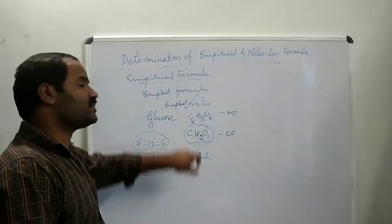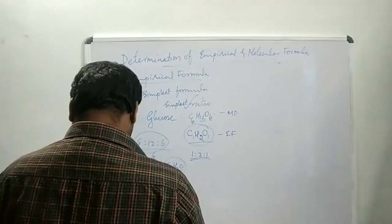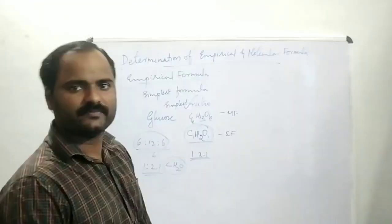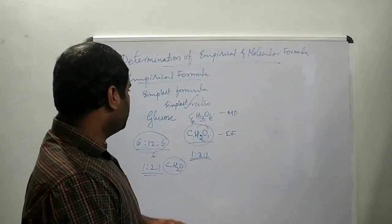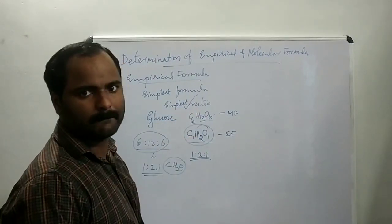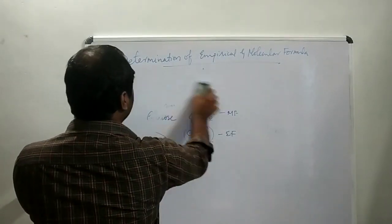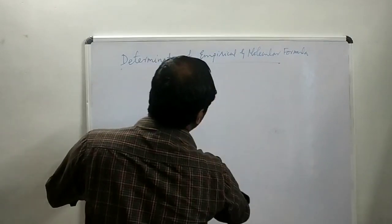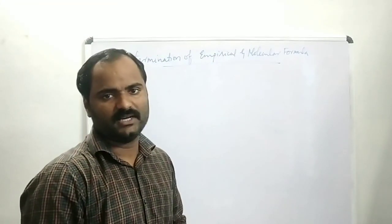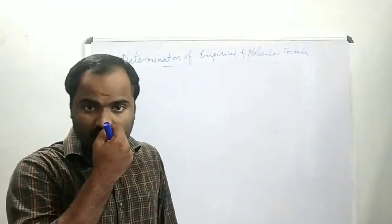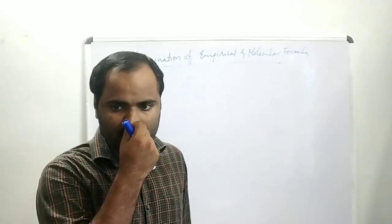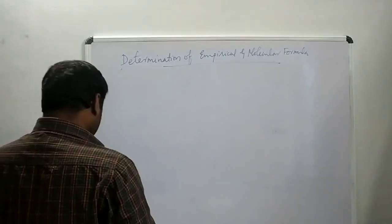Empirical formula gives the simplest ratio of atoms in a molecule. The molecular formula is C₆H₁₂O₆. Our topic is the determination of empirical and molecular formula — specifically, if percentage composition is given, how will you find out the empirical and molecular formula of a compound?